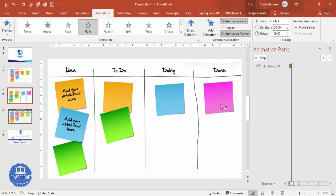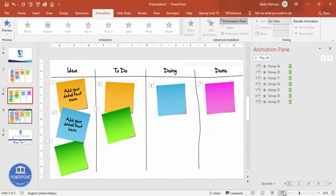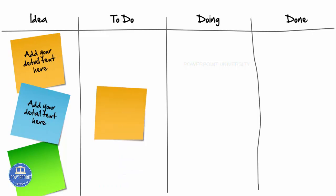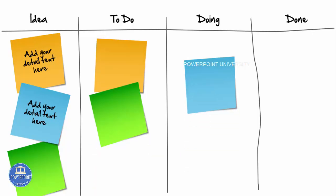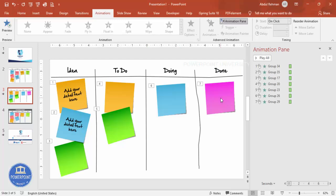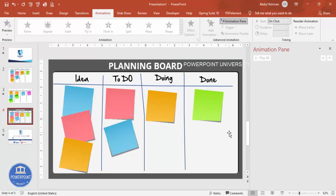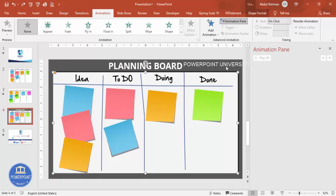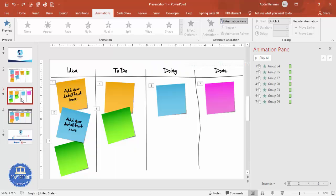Press Escape when done. If I do a slide show now, the first idea comes in, then the second, the third, then the to-do list, then doing, and the work already done. You can make it this way. If you like, you can change the design — for example I've used one rectangle and changed the background color to a dark color, giving a different look.